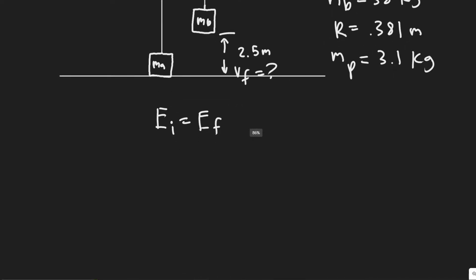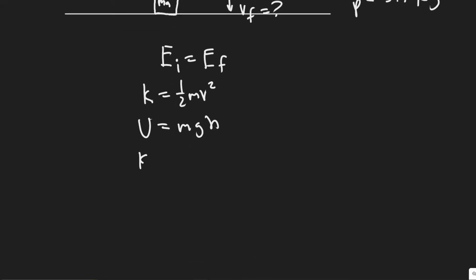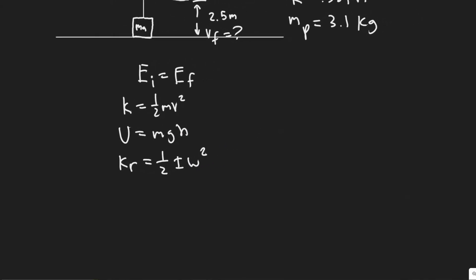There are three forms of energy to consider. Kinetic energy: KE = one half mv squared. Potential energy: U = mgh. And rotational kinetic energy: KR = one half I omega squared, where I is the inertia of the pulley and omega is the angular velocity.